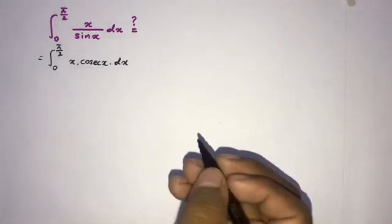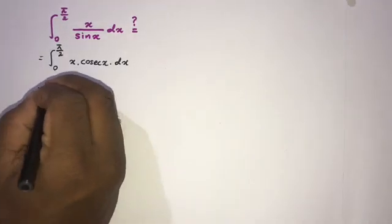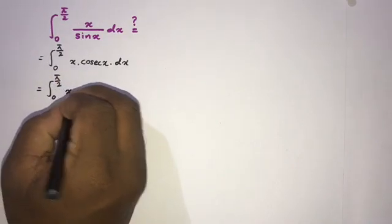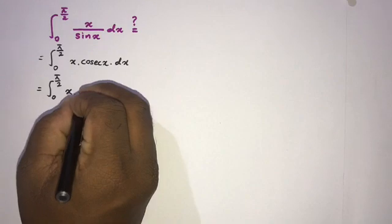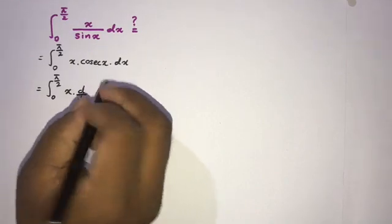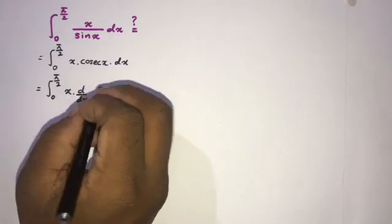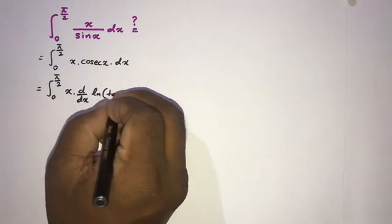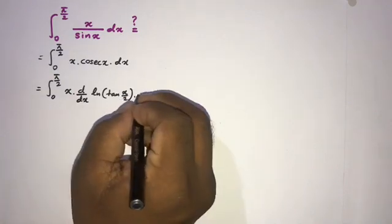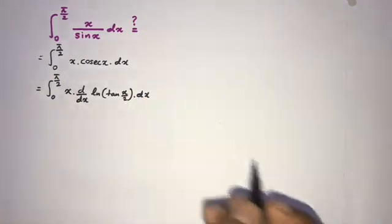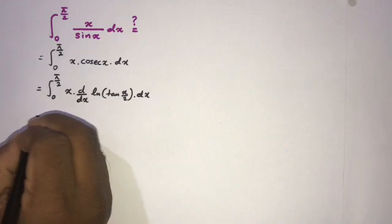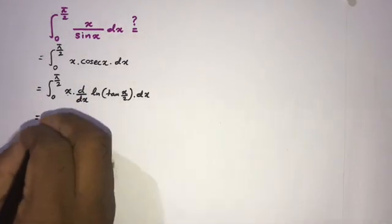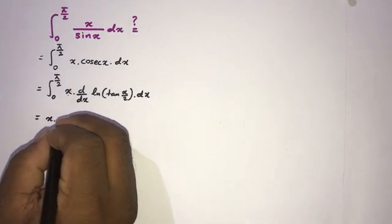I am going to use integration by parts. As the first function I will take x, and then we know that the integral of cosecant of x is the natural log of the absolute value of tan of x over 2.